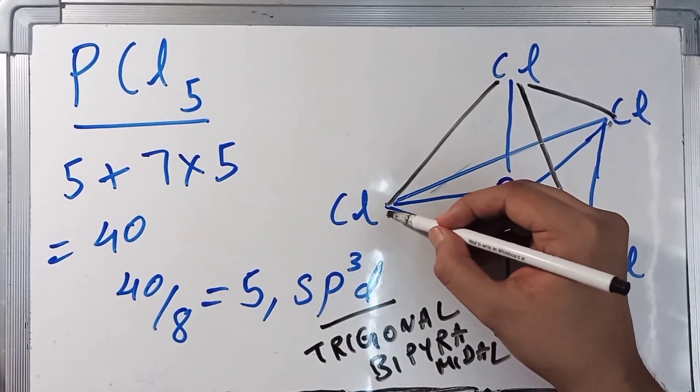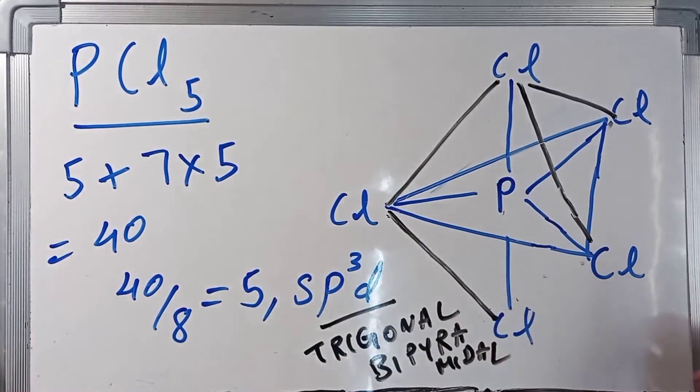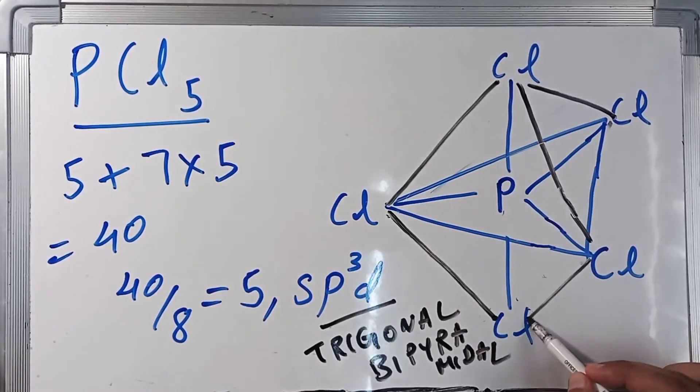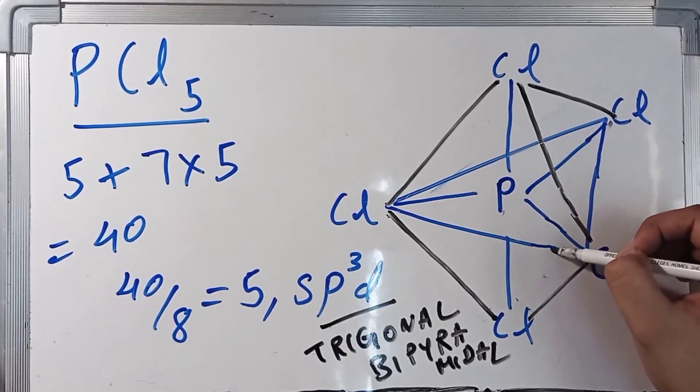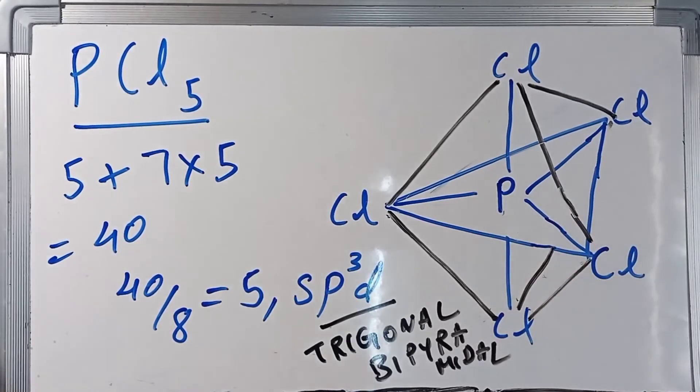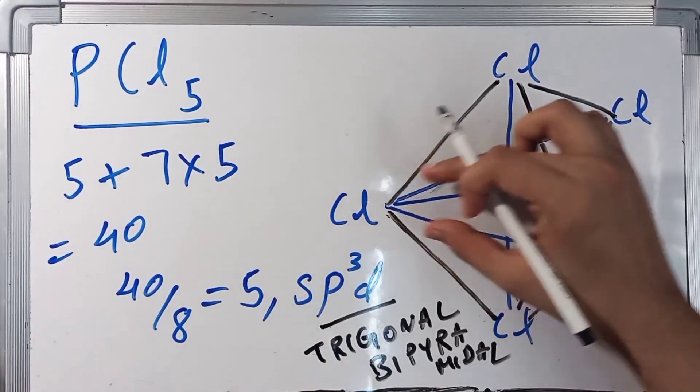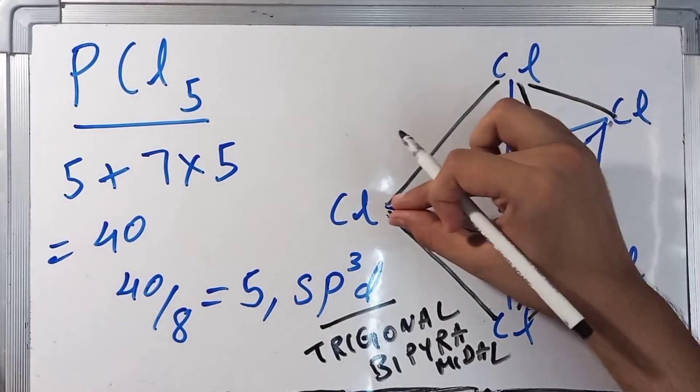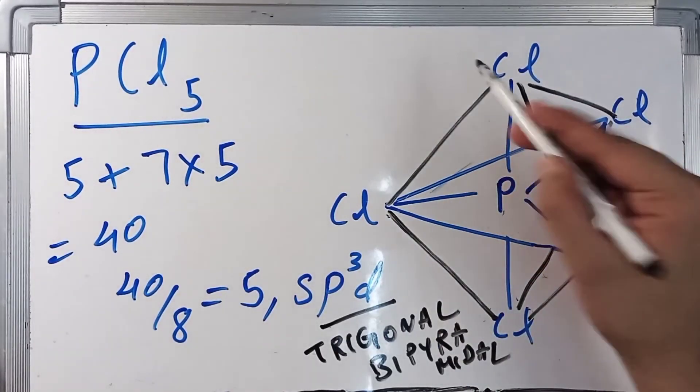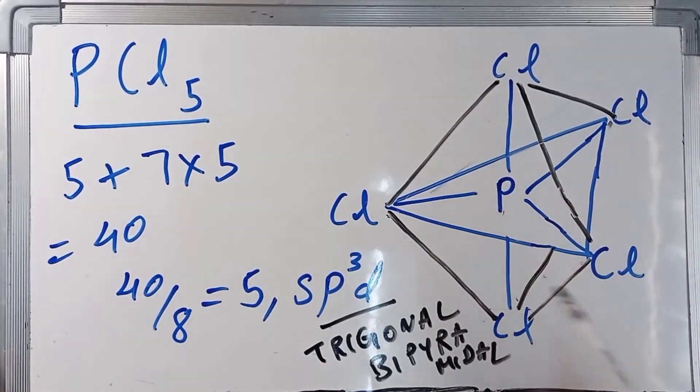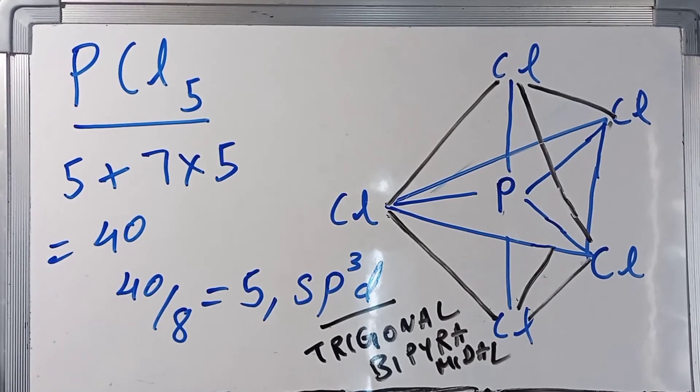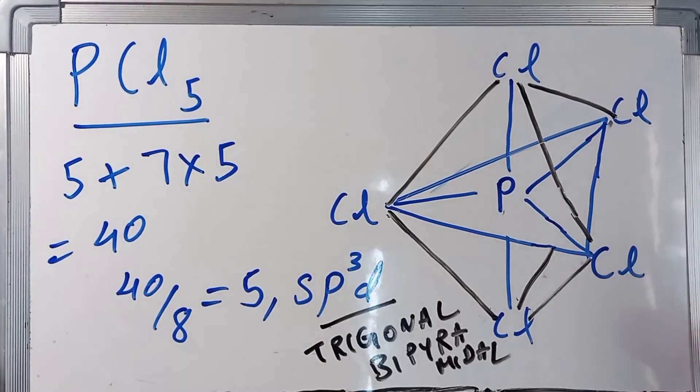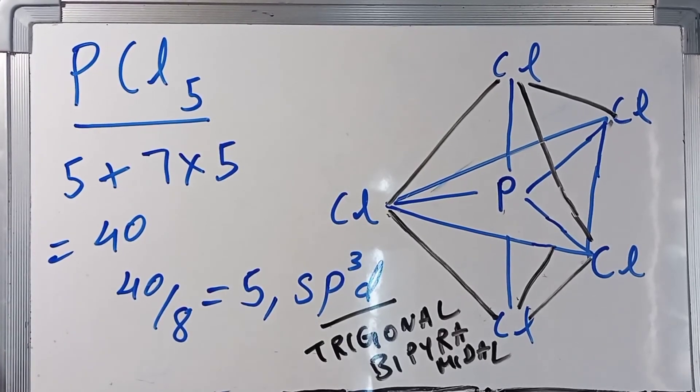Like this, here, and another one coming from here. So you've got a triangle, you've got one pyramid and you've got the second pyramid. So this was the actual structure of PCl5, which is trigonal bipyramidal.